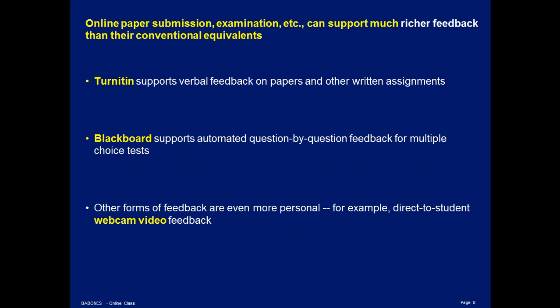Online paper submission, exams, etc., if they're done online, can support much richer feedback than the in-person equivalents. For example, we use Turnitin for written work. Turnitin, whatever you may think of it as an anti-plagiarism program, is great for providing verbal feedback. You read the paper and then you talk to the student for three minutes, and when the student wants to find out the reasons for the mark, the student listens to you for two or three minutes. It's a way to create a point of connection with students that we simply no longer have in classes of the size we typically teach in the 21st century. Blackboard also supports automated question-by-question feedback, so you can give specific feedback on a multiple choice test for right versus wrong answers. It's also pretty easy to record webcam video feedback and email that to students.